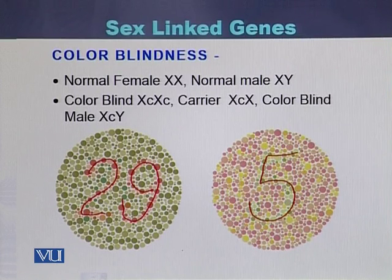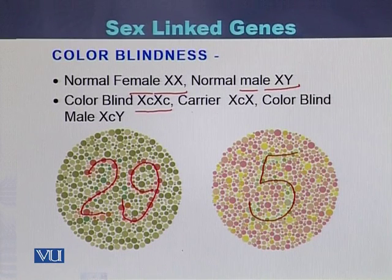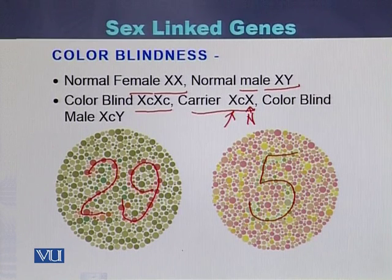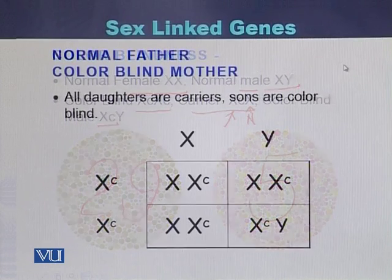To see how color blindness inherits: a normal female is XX and a normal male is XY. In the case of color blindness, a female will have the disease if she has both affected alleles. In the carrier case, she has one normal copy of the X chromosome and one affected allele — one normal copy and one affected copy makes her a carrier. In a color blind male, the allele present on the X chromosome is the affected one.